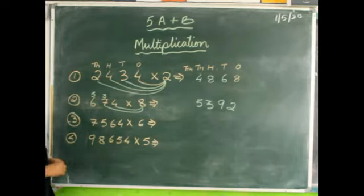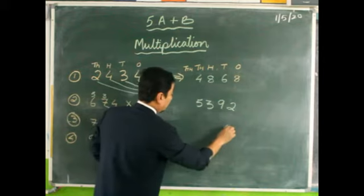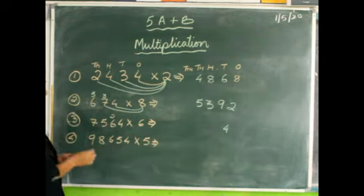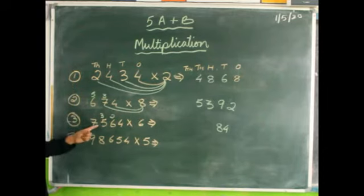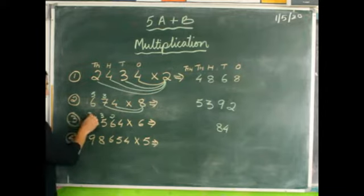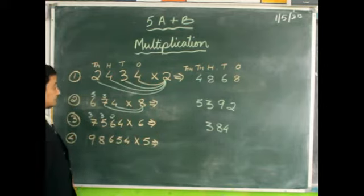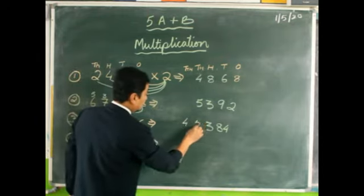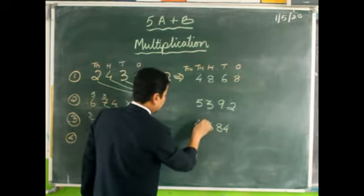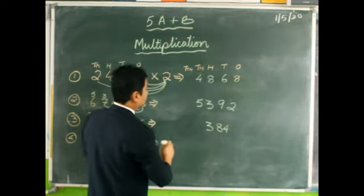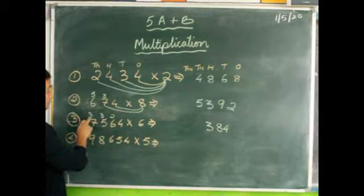Let's do the third sum now. Six fours are 24, write 4 carry 2. Six fours are 24, no — six twos are 12; 12 plus 2 is 14, write 4 carry 1. Six sixes are 36; 36 plus 2 is 38, write 8 carry 3. Six fives are 30; 30 plus 3 is 33. Six sevens are 42; 42 plus 3 is 45. Make sure you write the answer in the correct place value position.